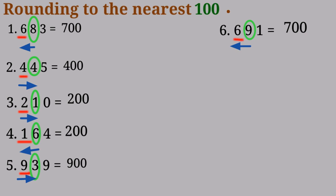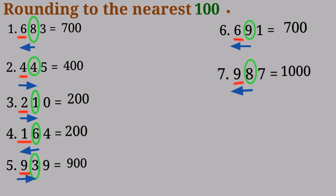Number 7: 987. 9 is in the hundreds place and 8 is in the tens place, and I know that 8 is a rounding up number. So it has the power to push 9 up. Then I'll take 8 and 7, turn them to 0, and it will become 1000.